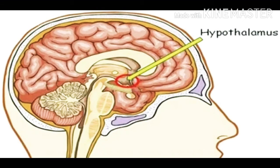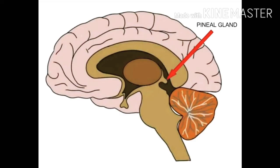The hypothalamus is situated at the base of the brain and releases two types of hormones: releasing hormones, which stimulate the pituitary gland to secrete hormones, and inhibiting hormones, which stop the pituitary gland from secreting hormones. The pineal gland is a small gland present near the cerebrum of the brain. It secretes the melatonin hormone and regulates the function of the gonads — meaning ovaries and testes.